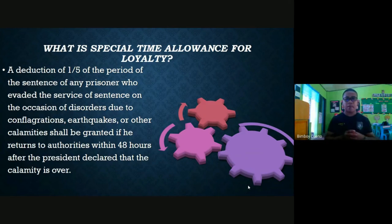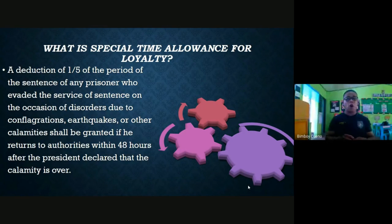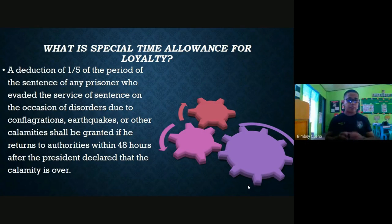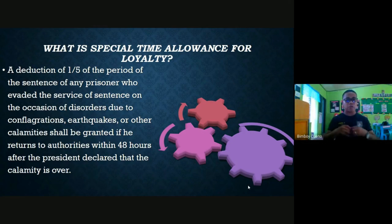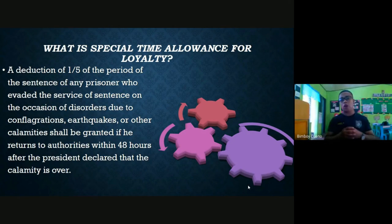Special time allowance for loyalty is a reduction of one-fifth of the sentence period for any prisoner who evaded service of sentence on the occasion of disorders due to conflagrations, earthquakes, or other calamities, provided he returns to authorities within 48 hours after the President declares the calamity is over. If a prisoner surrenders beyond 48 hours, he will no longer be allowed to avail of this allowance.